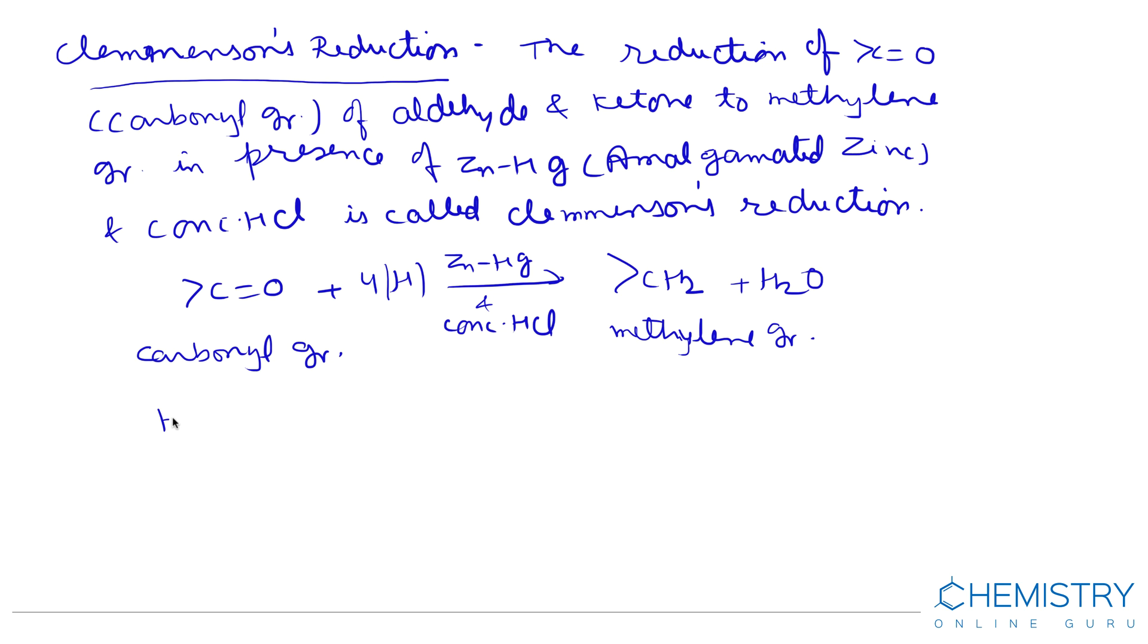Now, examples. This is formaldehyde. When reduced by amalgamated zinc and concentrated HCl, then this CO group is converted into CH2, giving methane plus water.